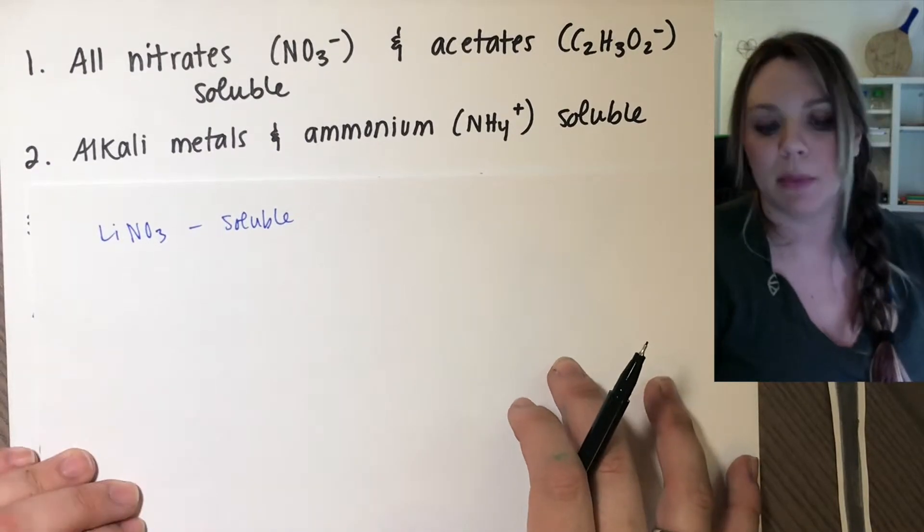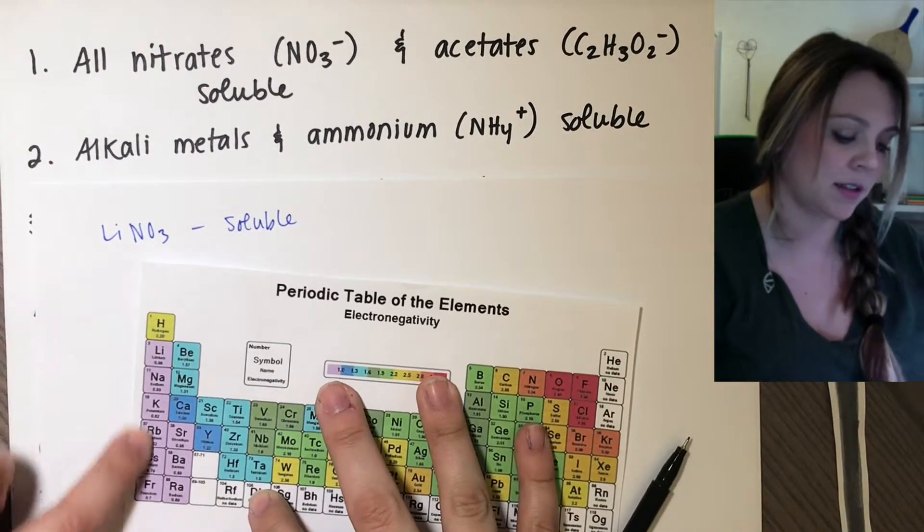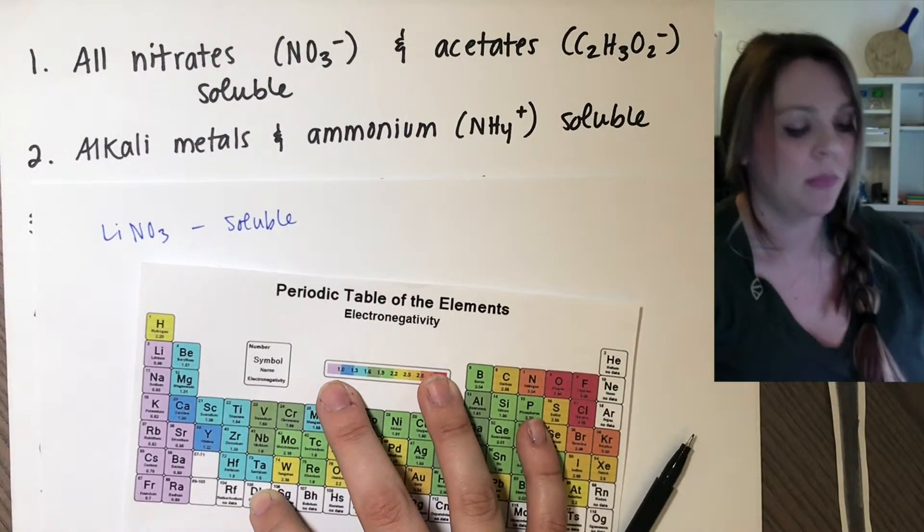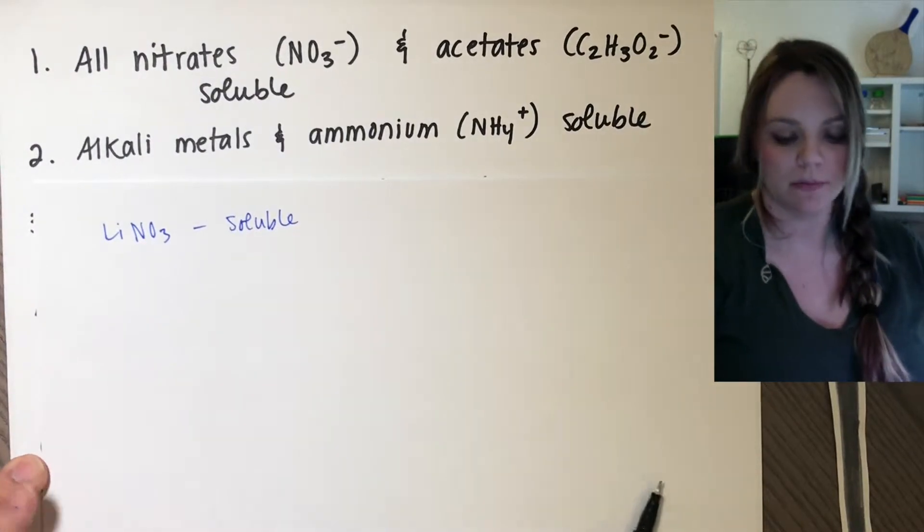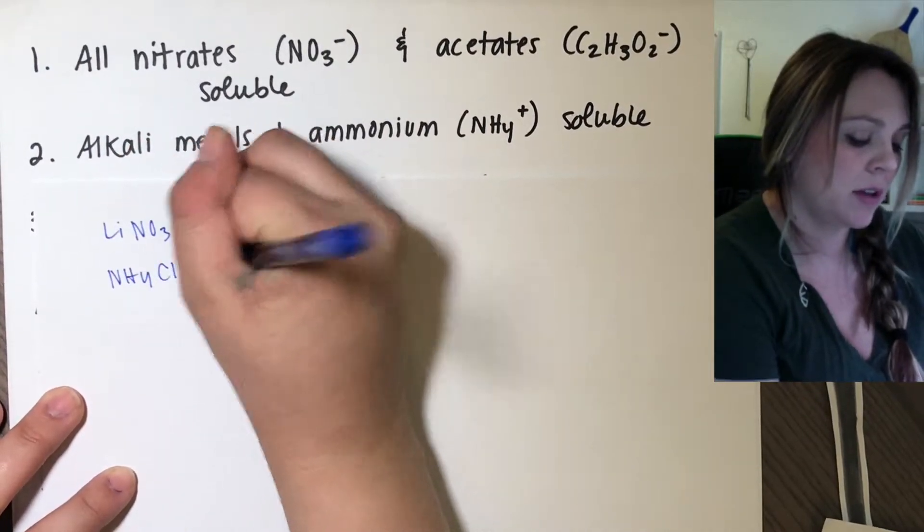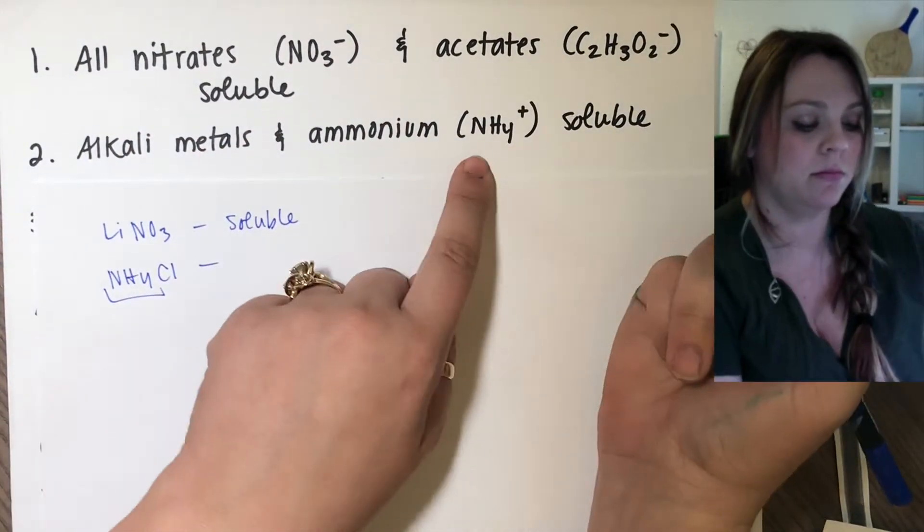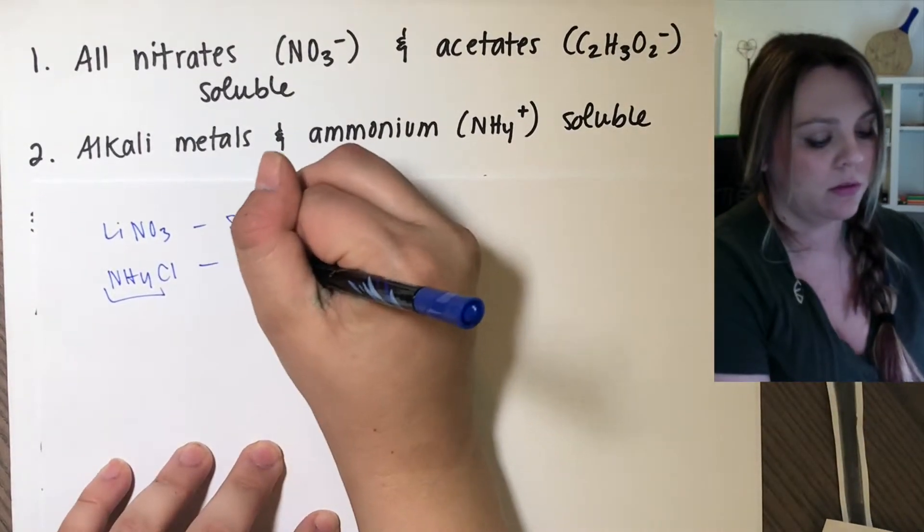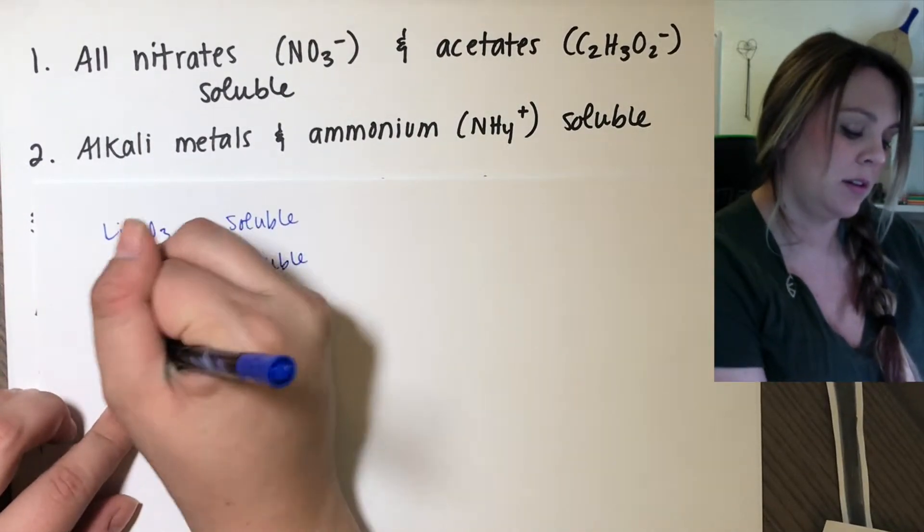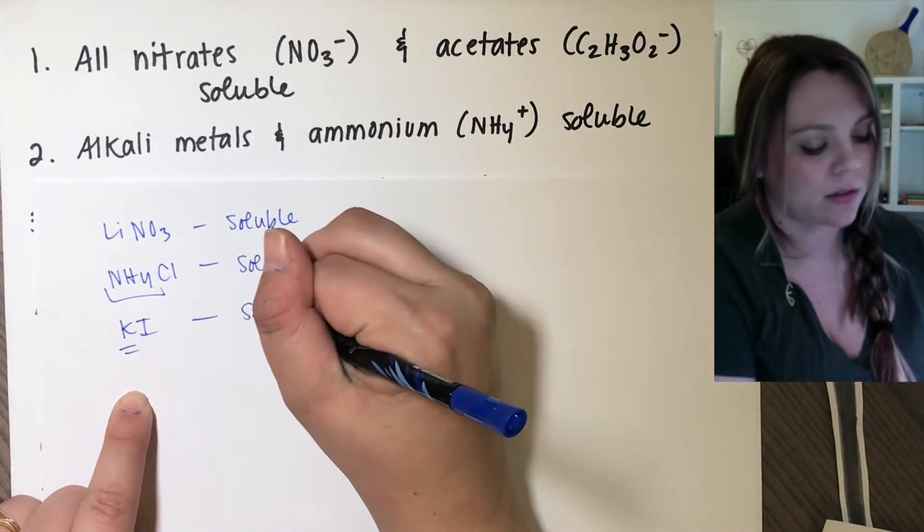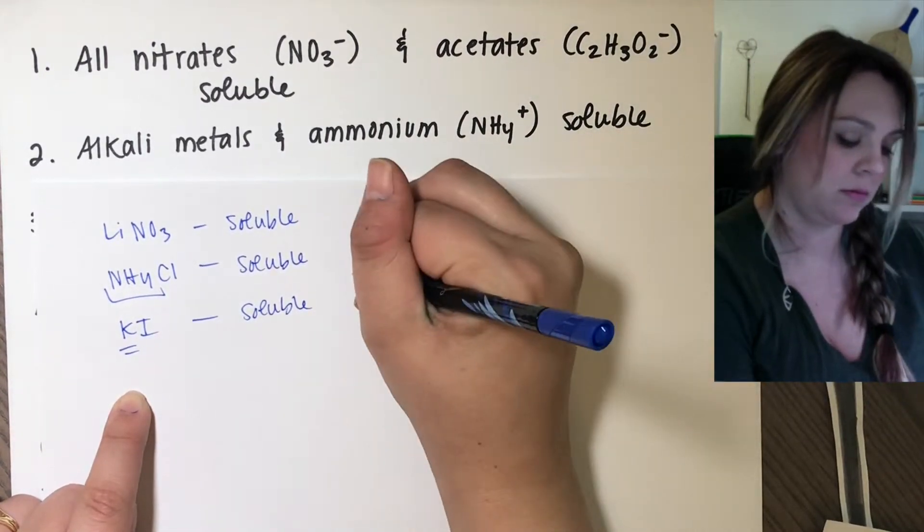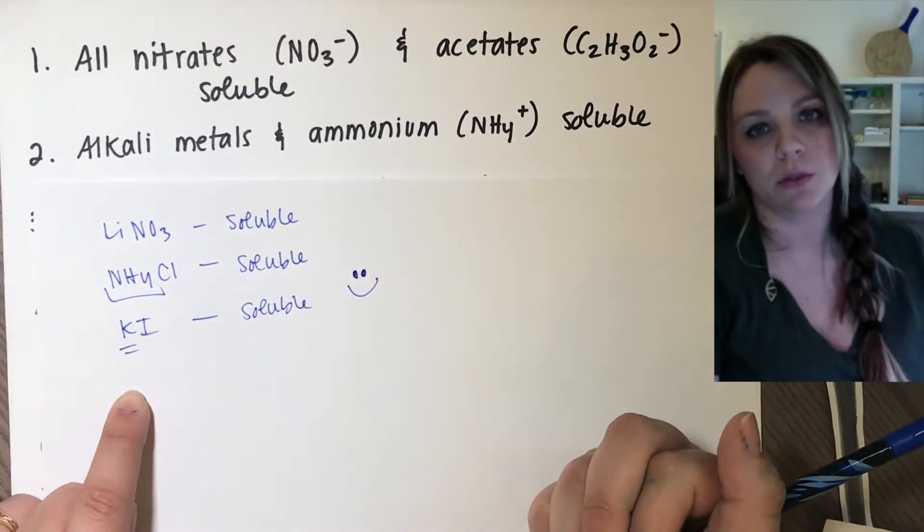Number two, all alkali metals. Alkali is the first column of your periodic table. All of your alkali metals, those are all soluble. So is ammonium, which is NH4 plus. So it doesn't matter. I could have NH4Cl, ammonium chloride. I have an ammonium, that dude's soluble. I could have potassium iodide. It's got a potassium. It's an alkali metal. That dude's soluble. The first two rules are really easy.